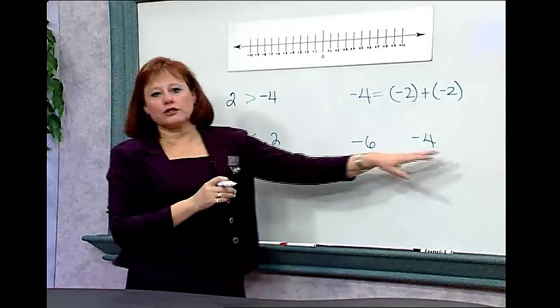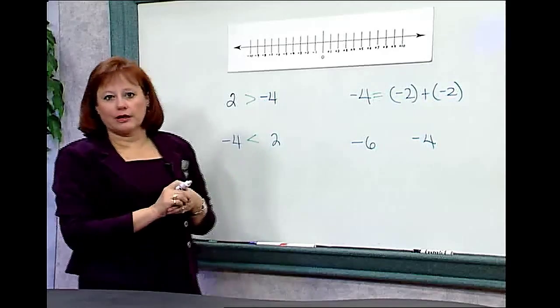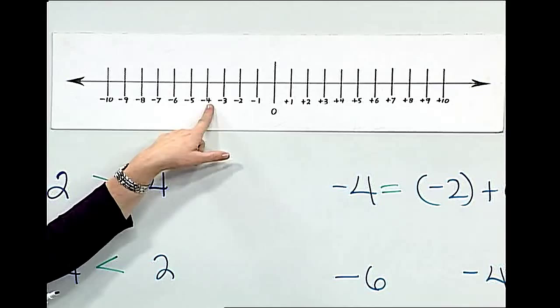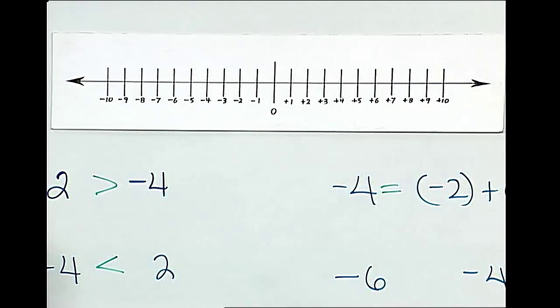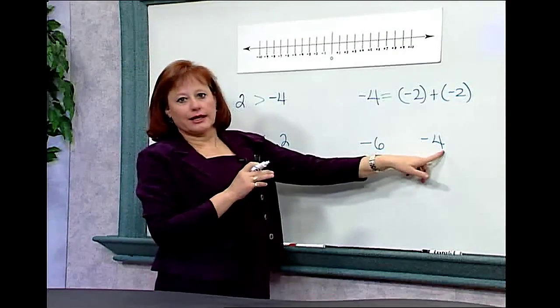Finally, when we're comparing two negative numbers, like negative 6 and negative 4, we have only to find them on the number line. We'll look for negative 6 and negative 4. We see that negative 4 is to the right of negative 6, so it is the larger number. We know that negative 6 is less than negative 4.